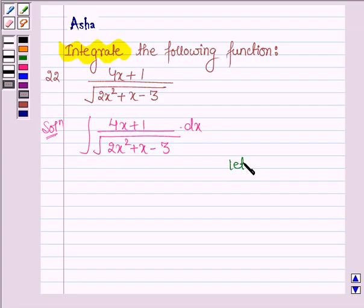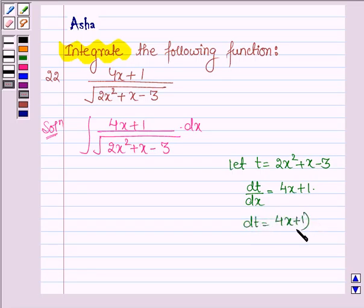Now let us put t is equal to 2x square plus x minus 3. So on differentiating both sides with respect to x, on the left hand side we have dt upon dx and on the right hand side we have 4x plus 1. So dt is equal to 4x plus 1 into dx.